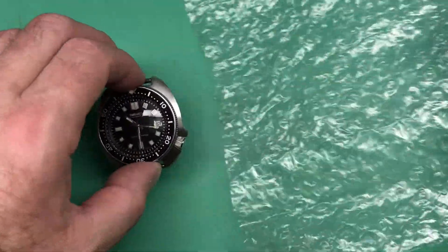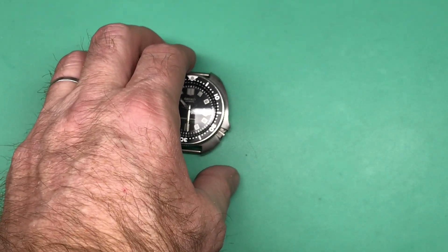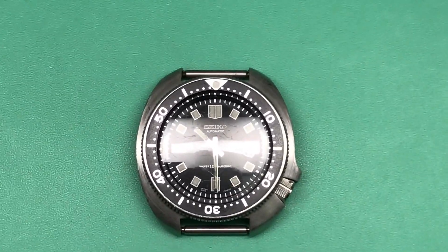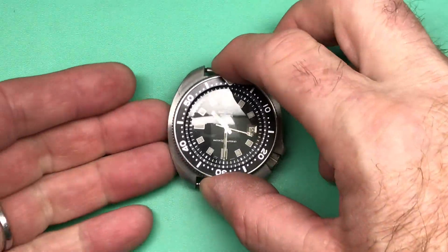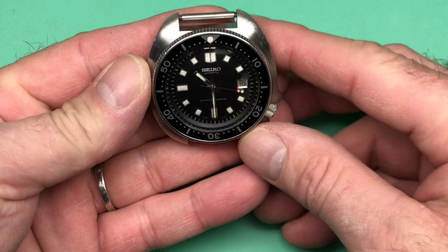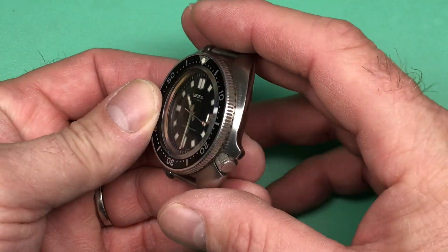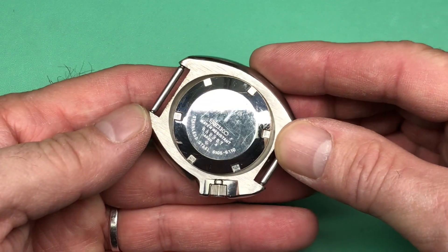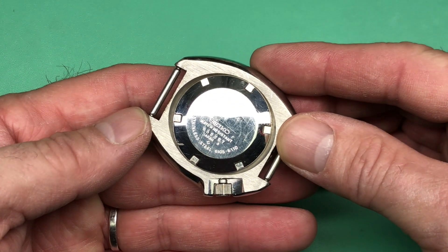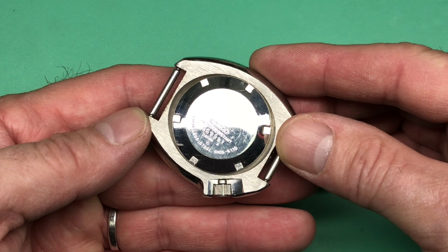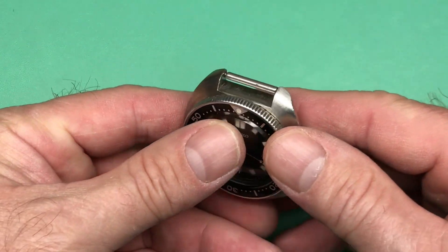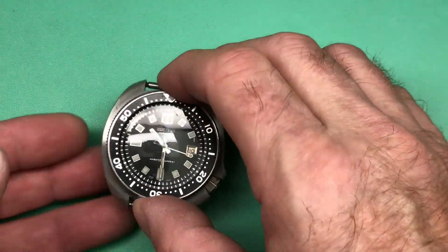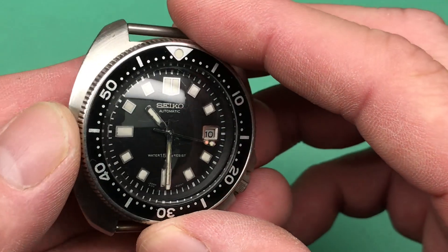Okay, wow, nice. One of my favorites of course. So this is of course a 6105 and it's the 8110 from May of 76. Very nice looking watch, good loom, condition is beautiful.